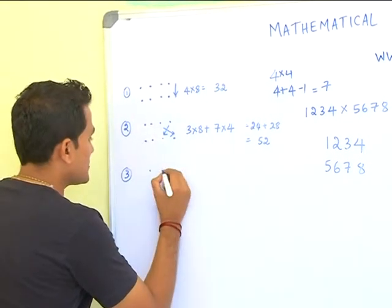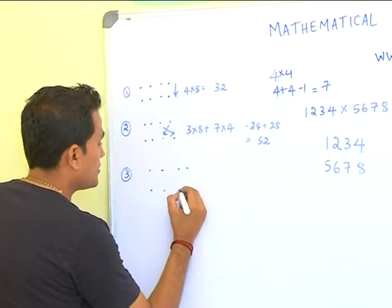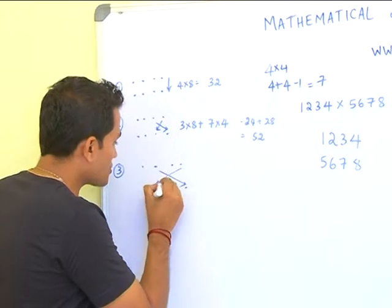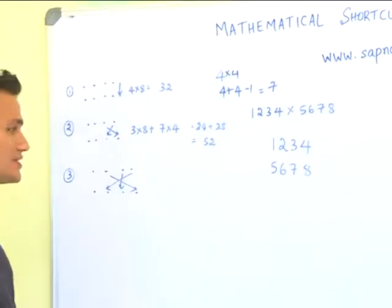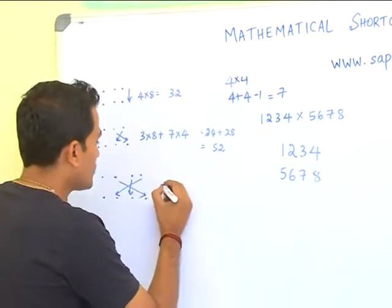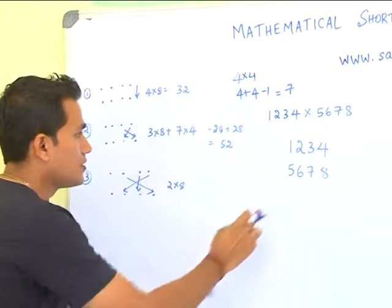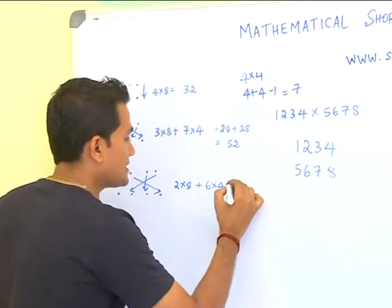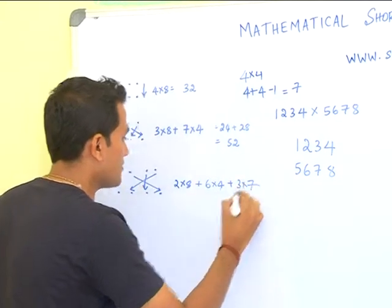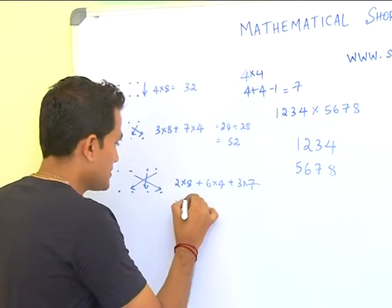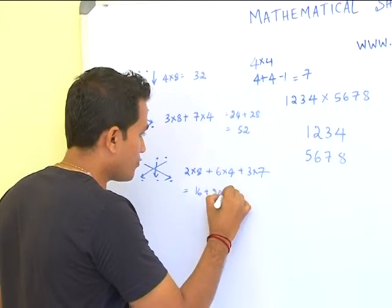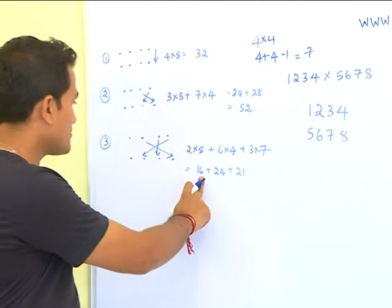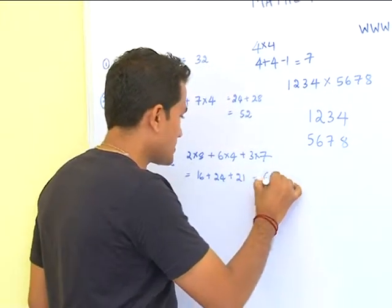The third step, you already know this from the three cross three multiplication, to perform this cross from the last three digits. That is two into eight plus six into four plus three into seven. That is sixteen plus twenty-four plus twenty-one, which equals sixty-one.